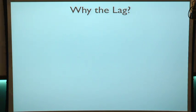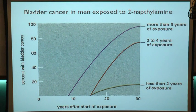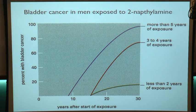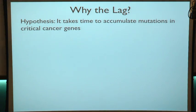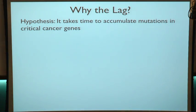All these types of cancer seem to show the same kind of phenomenology. You're exposed to some sort of chemical, and then after some lag time that chemical causes you to get cancer. The obvious question is where does this lag come from? The hypothesis is that what's causing the cancer is that you're accumulating mutations in your cells. There are specific genes in your cells responsible for causing the cancer, and it just takes time to accumulate the necessary mutations in those genes to generate the cancer.